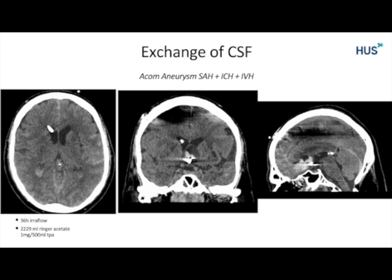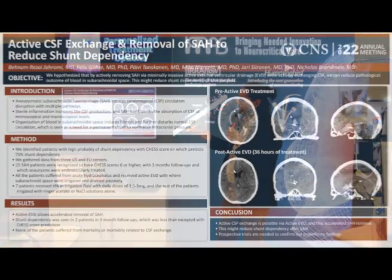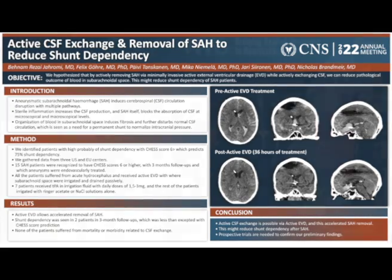When you remove the SAH from the subarachnoid space, can you reduce shunt dependency? We found 15 patients whose CHESS score was more than 6, meaning they had a 75% probability of shunt dependency. From those 15 patients, only two actually got a shunt, whereas 11 were expected. So there was a significant reduction in shunt dependency after removing SAH from the subarachnoid space following aneurysmatic rupture.